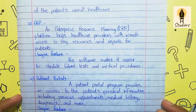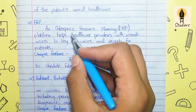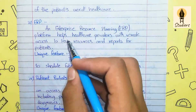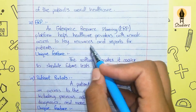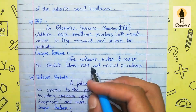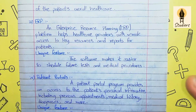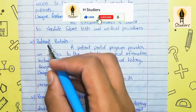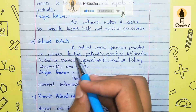Number three: ERP — Enterprise Resource Planning. An ERP platform helps healthcare providers with remote access to key resources and reports for patients. Its unique feature is that the software makes it easier to schedule future tests and medical procedures.